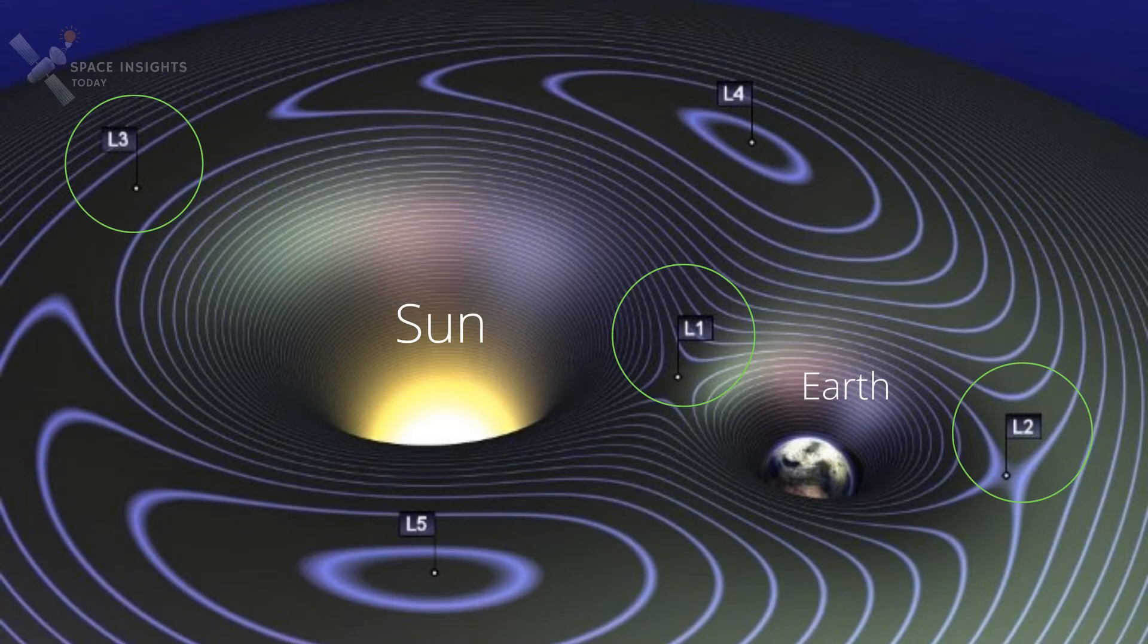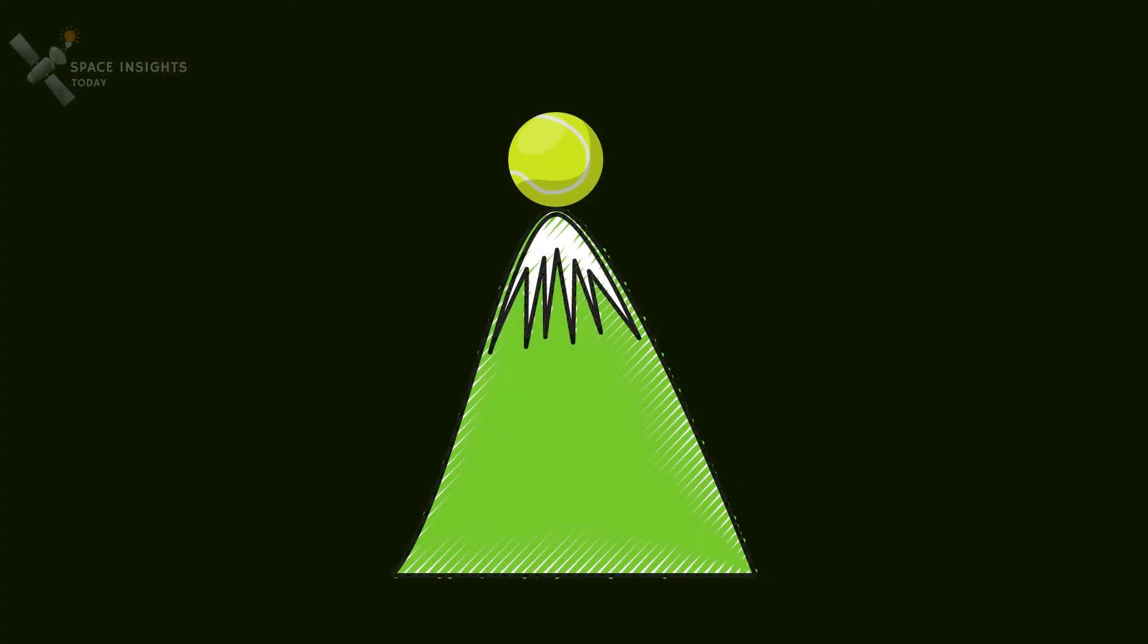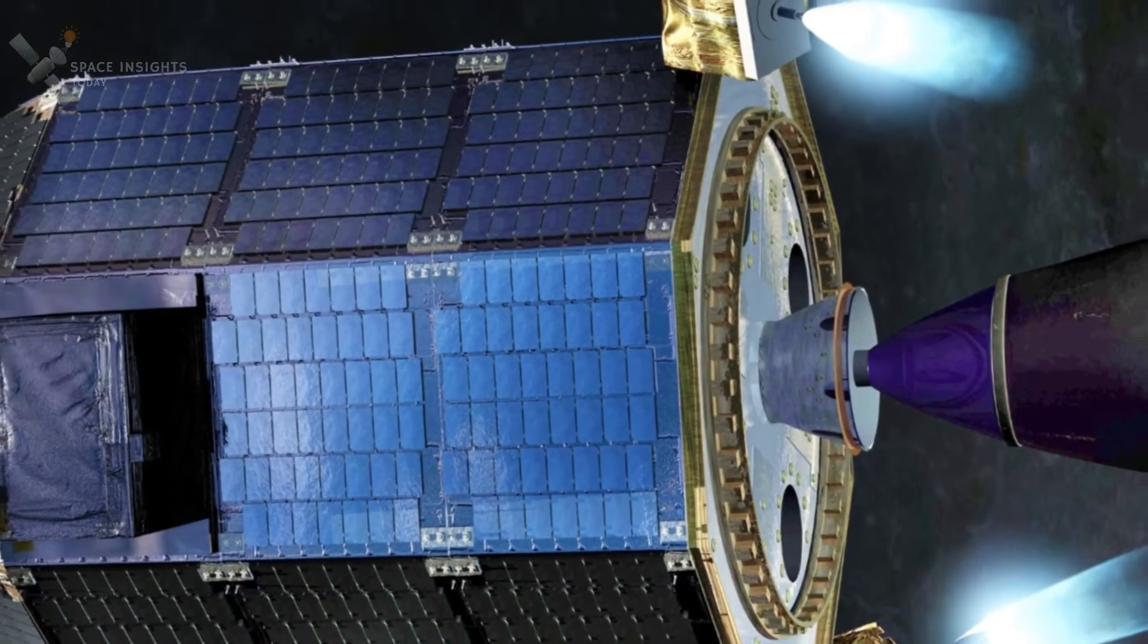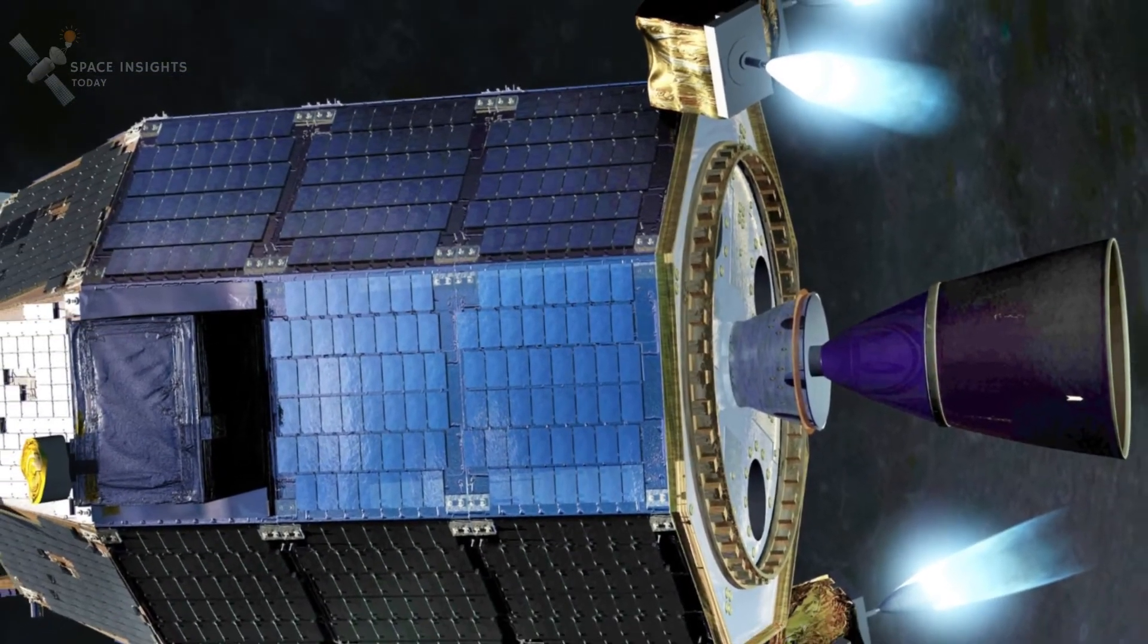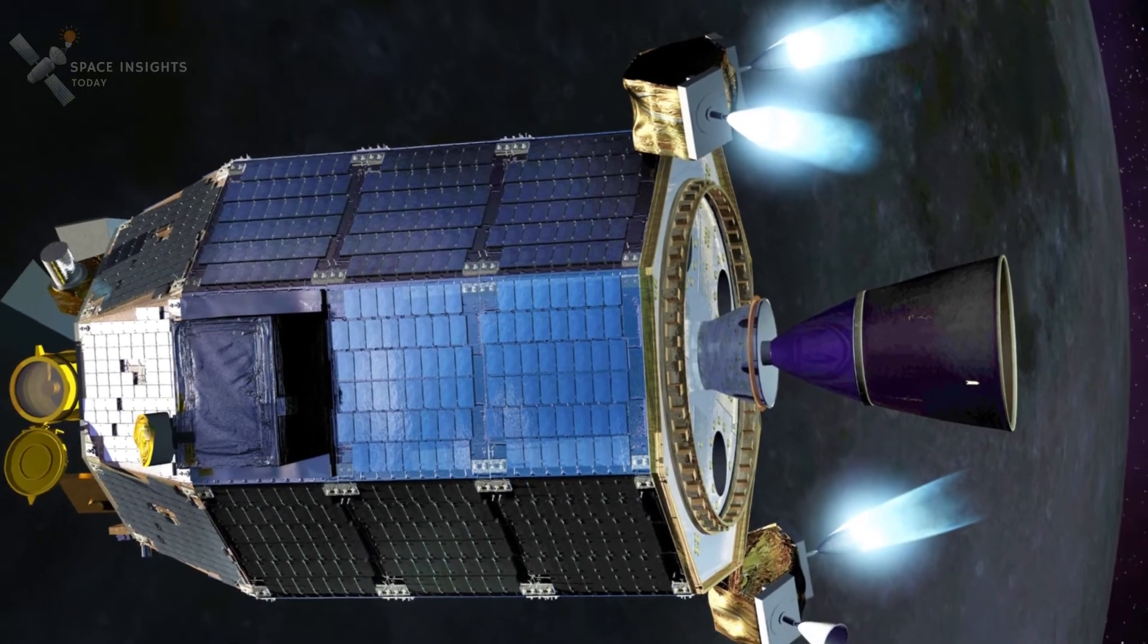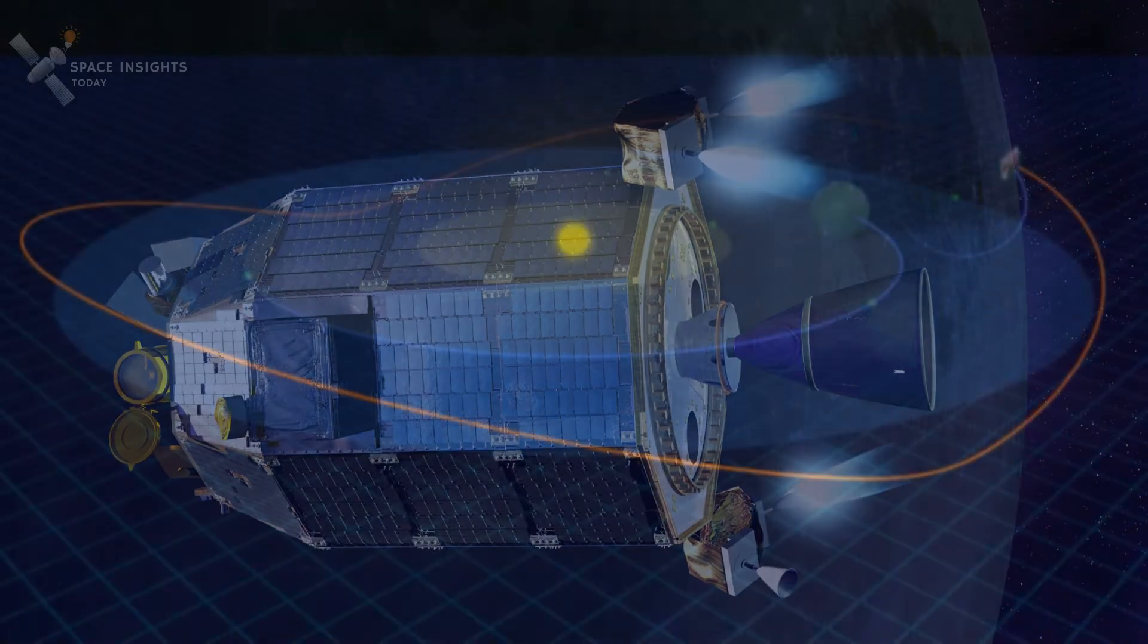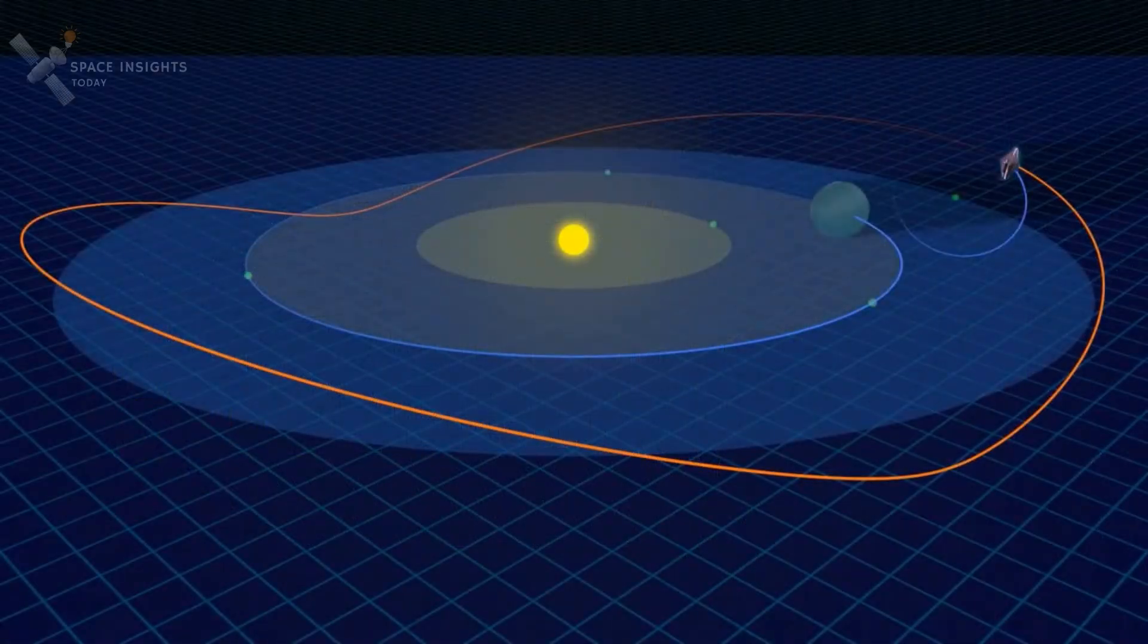As you can see in this illustration, a spacecraft at L1, L2, or L3 is metastable, like a ball sitting on top of a hill. A little push or bump, and it starts moving away. So a spacecraft must use rocket firings roughly every 25 days or so, to stay in so-called halo orbits around these Lagrangian points.